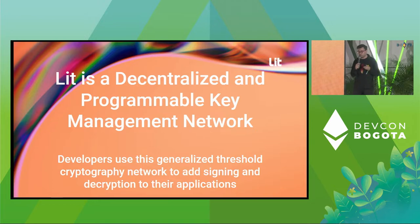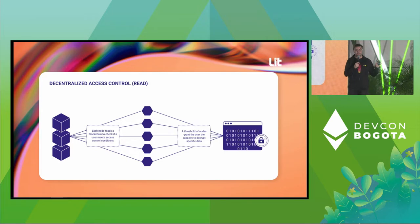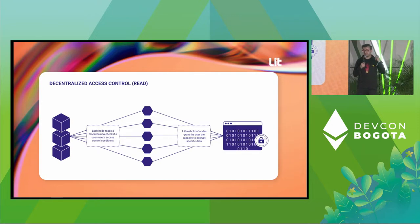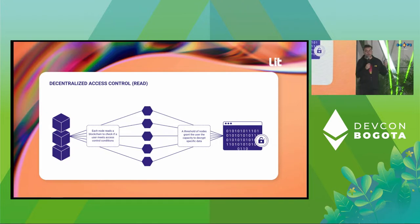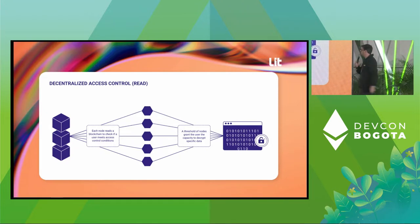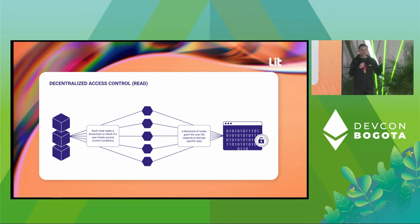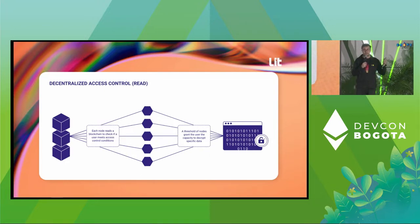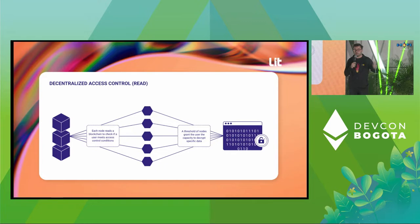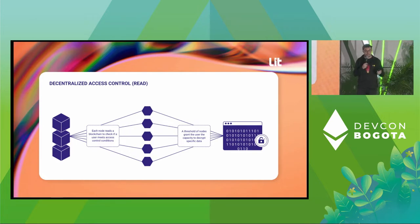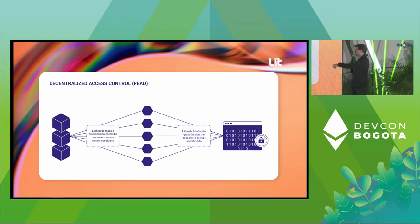A key can functionally do two things: it can read or encrypt, and write. This network provides the same functionality in a programmatic way. The hexagons in the middle represent the lit nodes. Alice, let's say, is a creator and wants to say anybody who owns her NFT can see her video. She would encrypt that video client side and store it somewhere in public, whether on a blockchain or a storage network like IPFS, and then create a set of rules that says only somebody who owns Alice's NFT can see that video. Bob owns that NFT and shows up later. He signs a message and broadcasts that to the nodes.